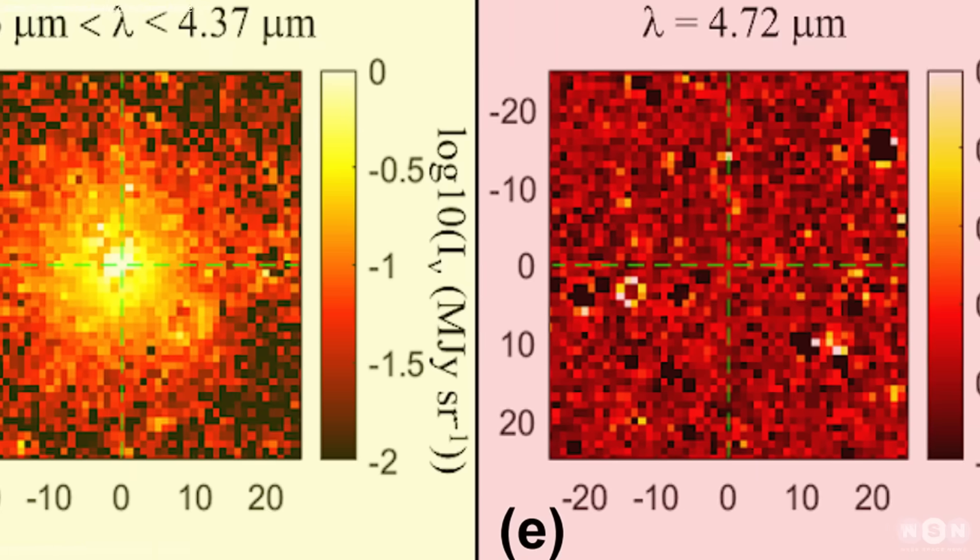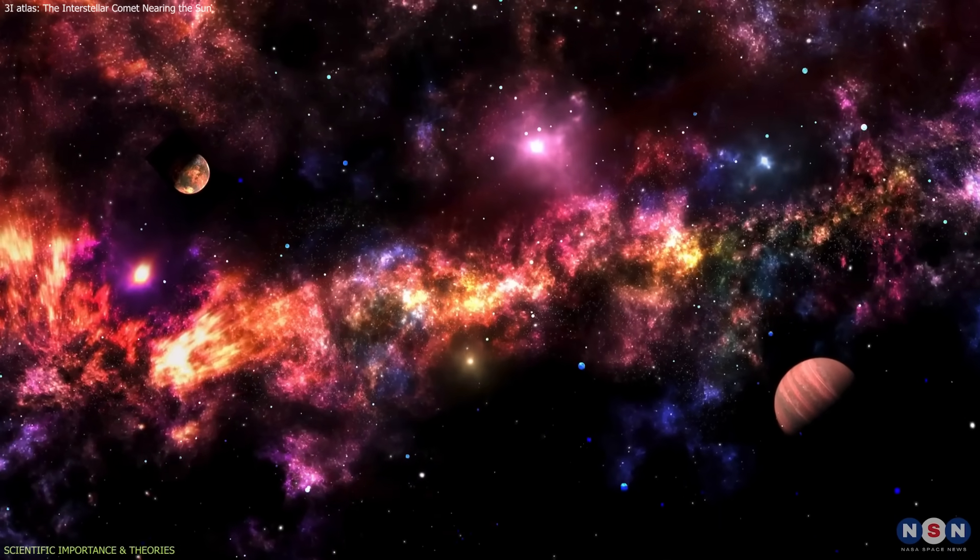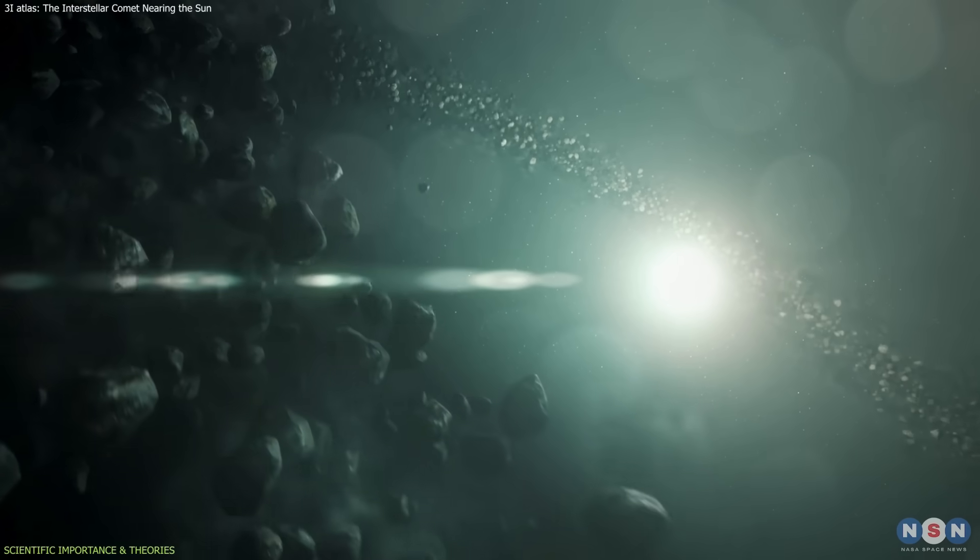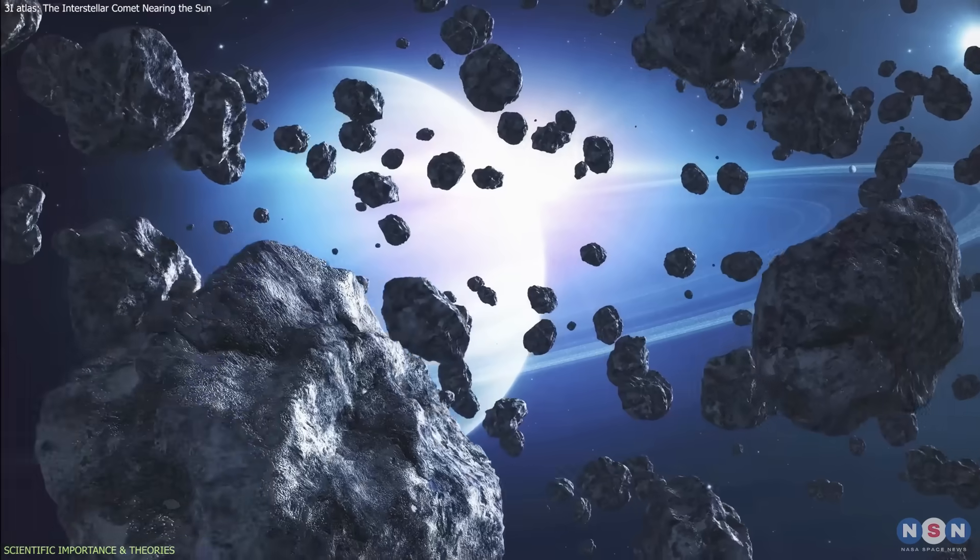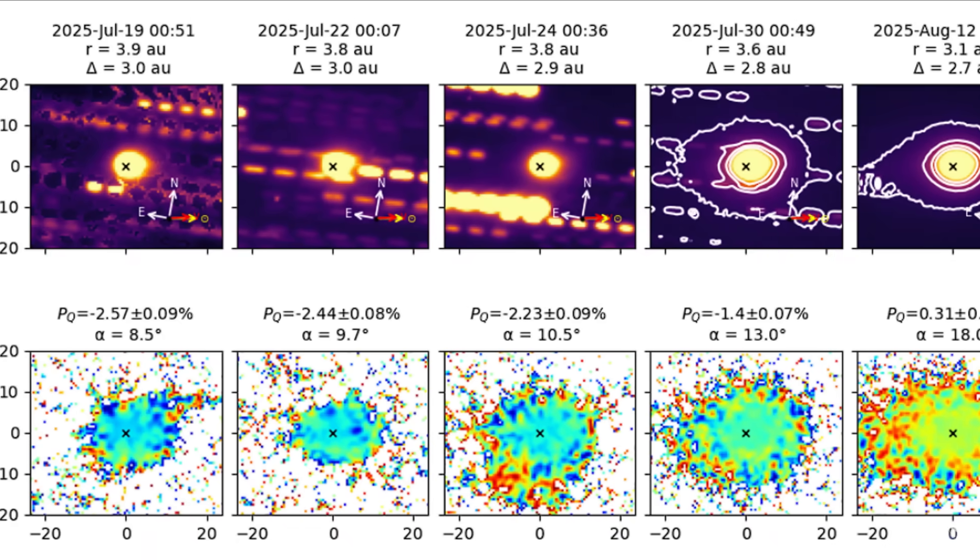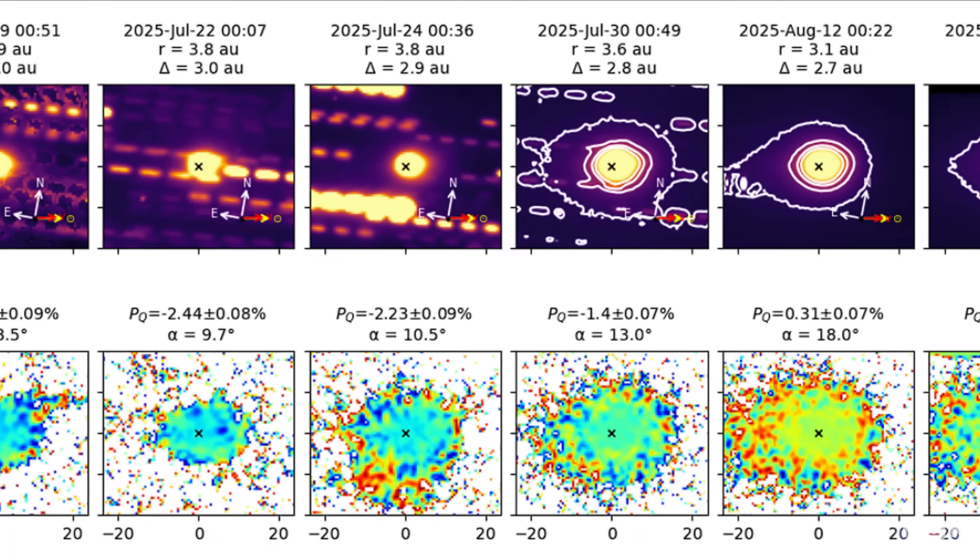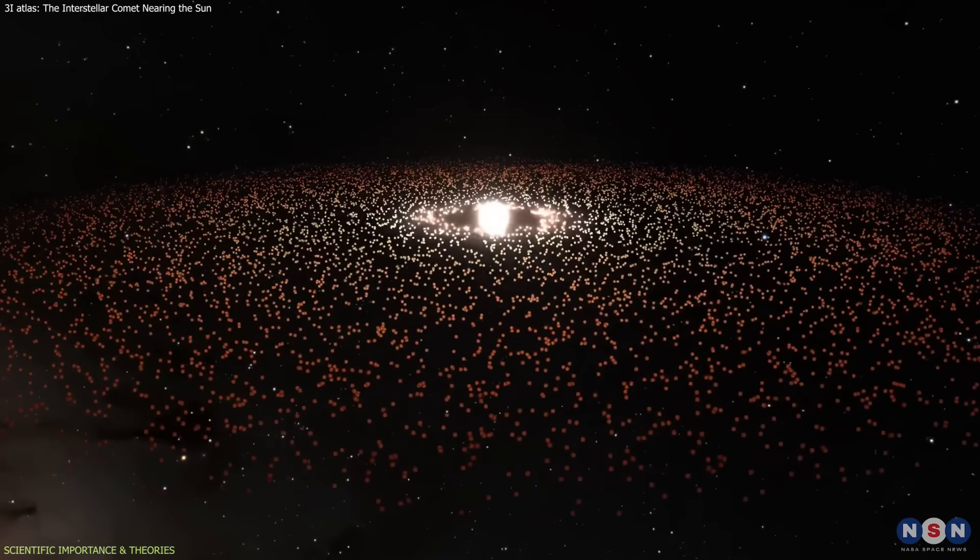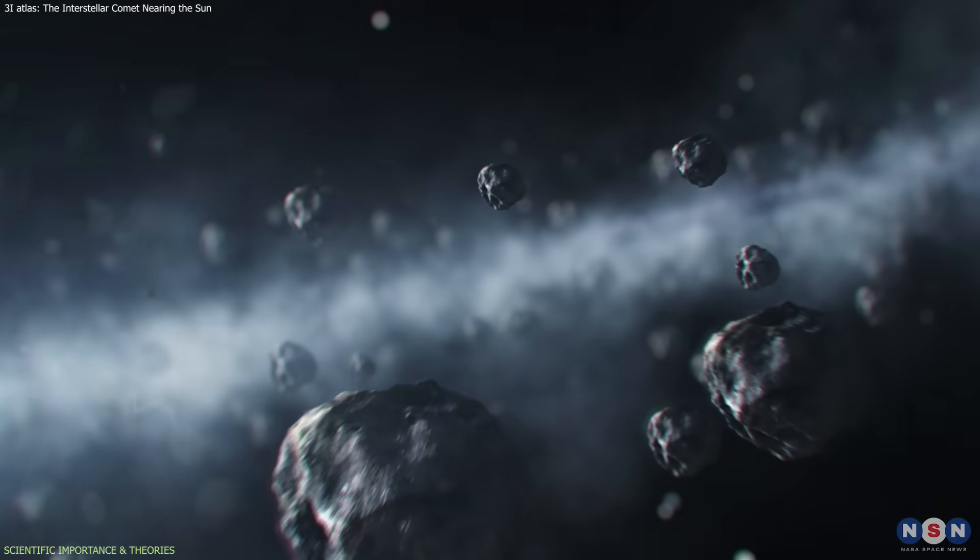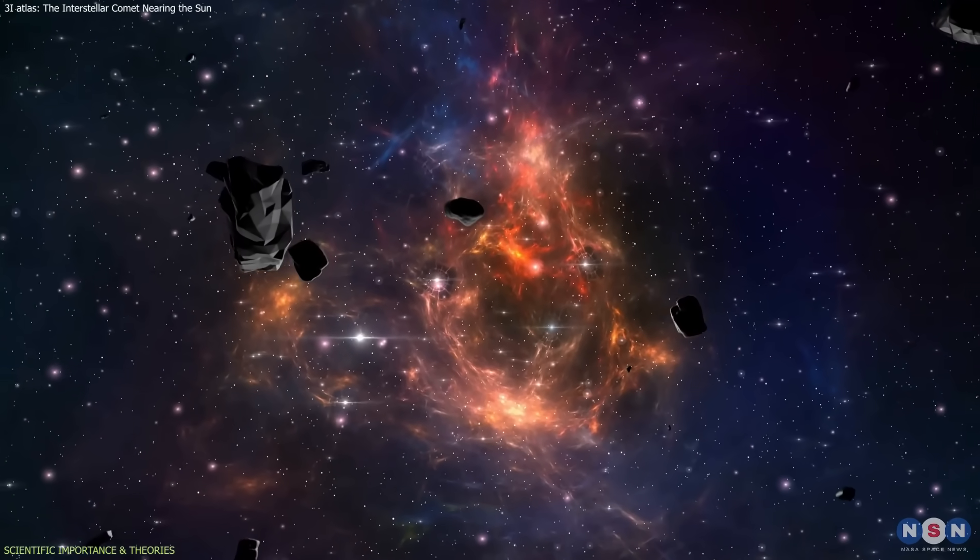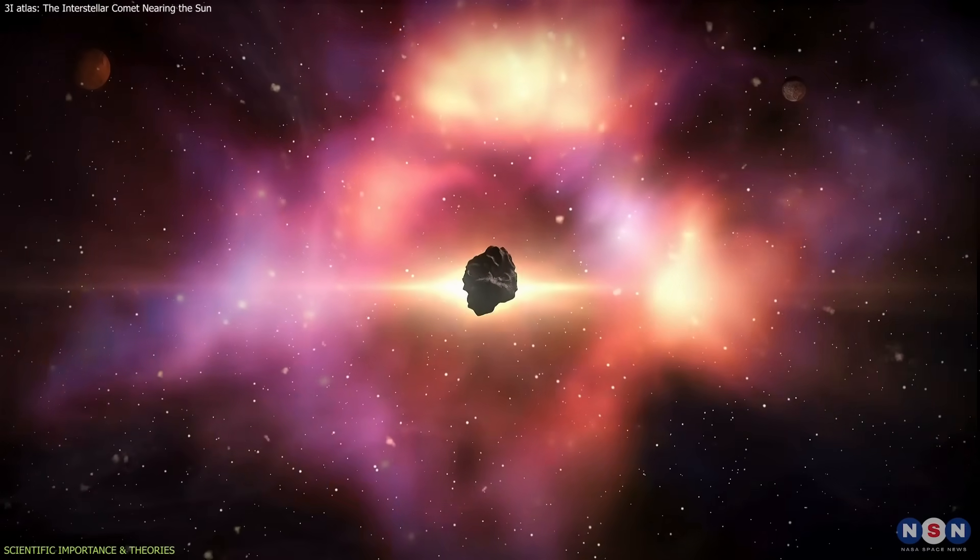Its chemical composition provides a unique glimpse into conditions in other star systems. A CO2-dominated profile implies it formed in the colder outer regions of a protoplanetary disk around another star. This fits with its interstellar trajectory and sets it apart from typical solar system comets that formed closer to the Sun. The polarization signature, the way its dust scatters polarized light, also diverges from common patterns observed in local comets. This suggests differences in dust grain structure, size distribution, or mineral composition.